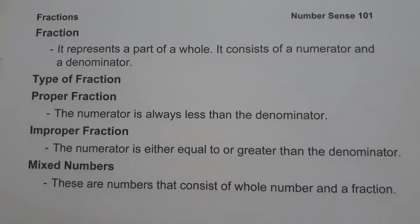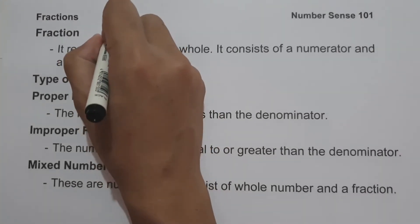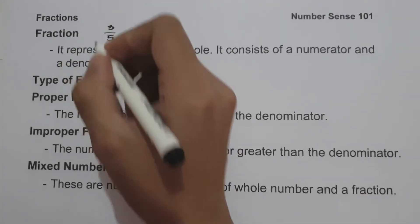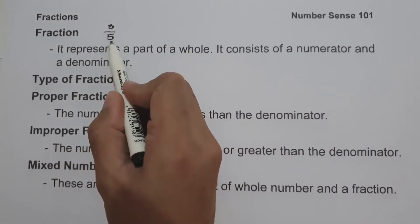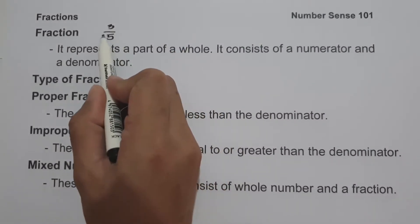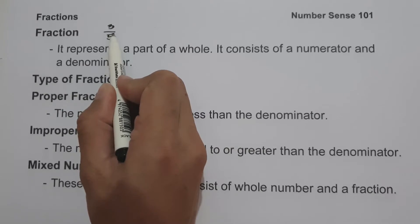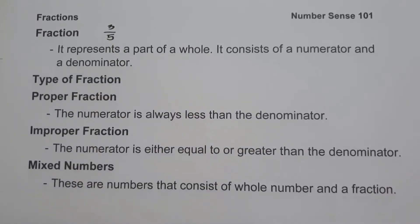For today's video, we are going to talk about what fractions are and we are going to explain everything in detail. A fraction represents a part of a whole, and a fraction consists of a numerator and denominator. For example, 3 over 5 is an example of a fraction — 3 is the numerator, 5 is the denominator, and the line is called the fraction line or fraction bar, which indicates division.